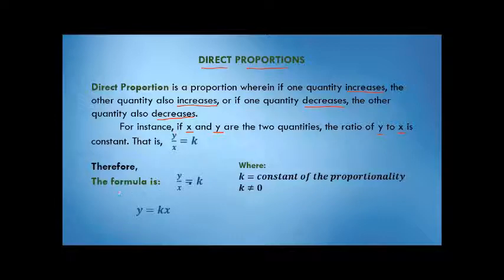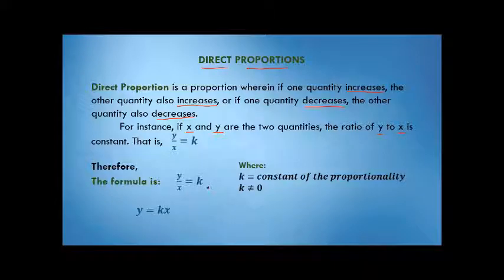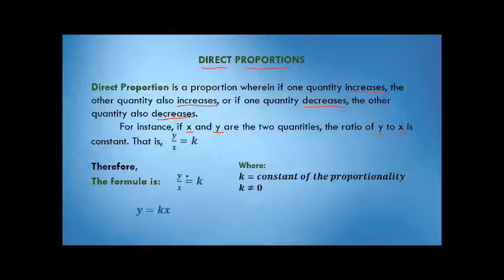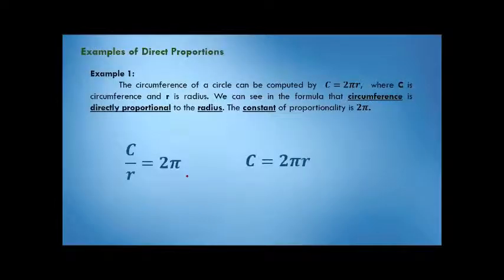The formula is y over x equals k, or derived into y equals k times x. When we see that form of formula, that is direct proportion. Here, k represents the constant of proportionality — it does not change regardless of the values of x and y, and it must not be equal to zero. There is no constant of zero in proportions.